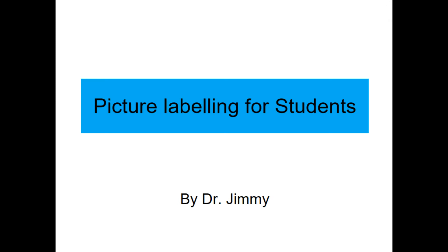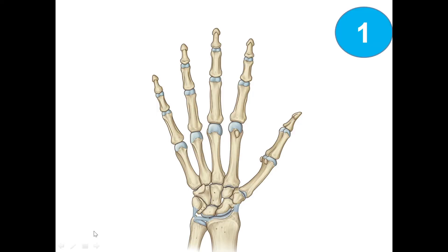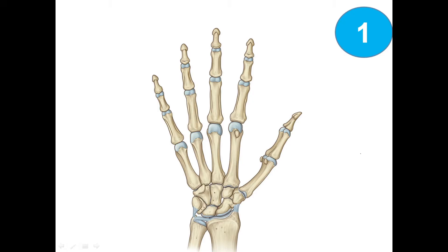Good morning students, today we are going to have picture labeling for Chinese students. The first picture here in front of us is the hand. We can start from the forearm bones — here we can see the radius and the ulna. After that, we are having here the eight carpal bones.